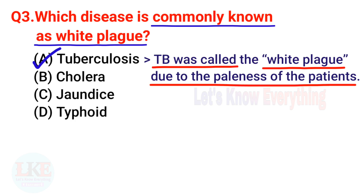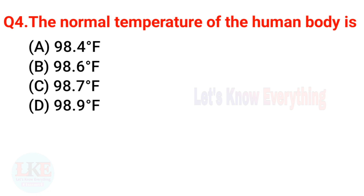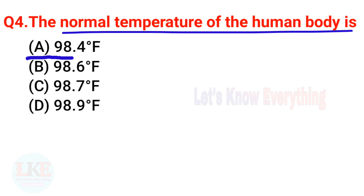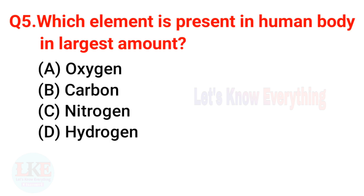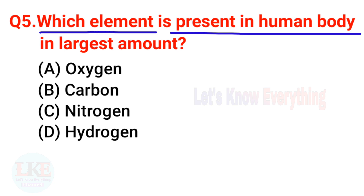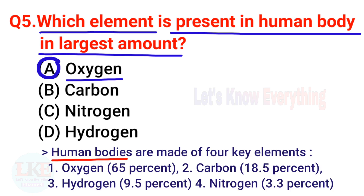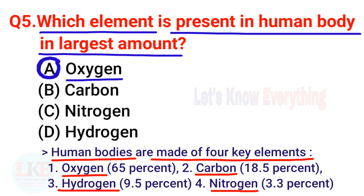Question 4: The normal temperature of the human body is 98.6°F or 37°C. Question 5: Which element is present in the human body in the largest amount? The right answer is option A — oxygen. Human bodies are made of four key elements: oxygen 65%, carbon 18.5%, hydrogen 9.5%, and nitrogen 3.3%.